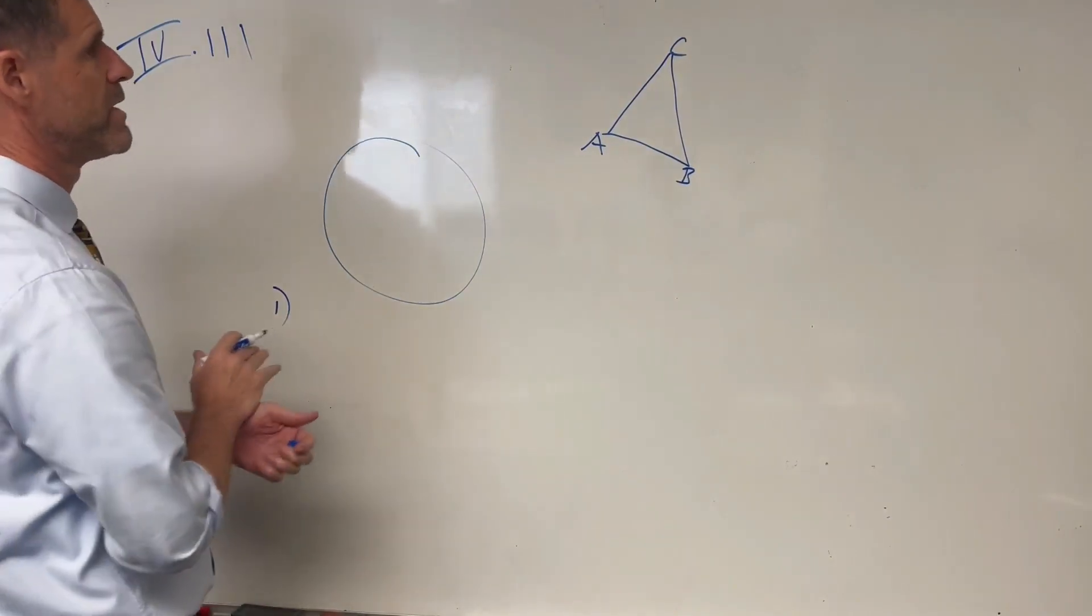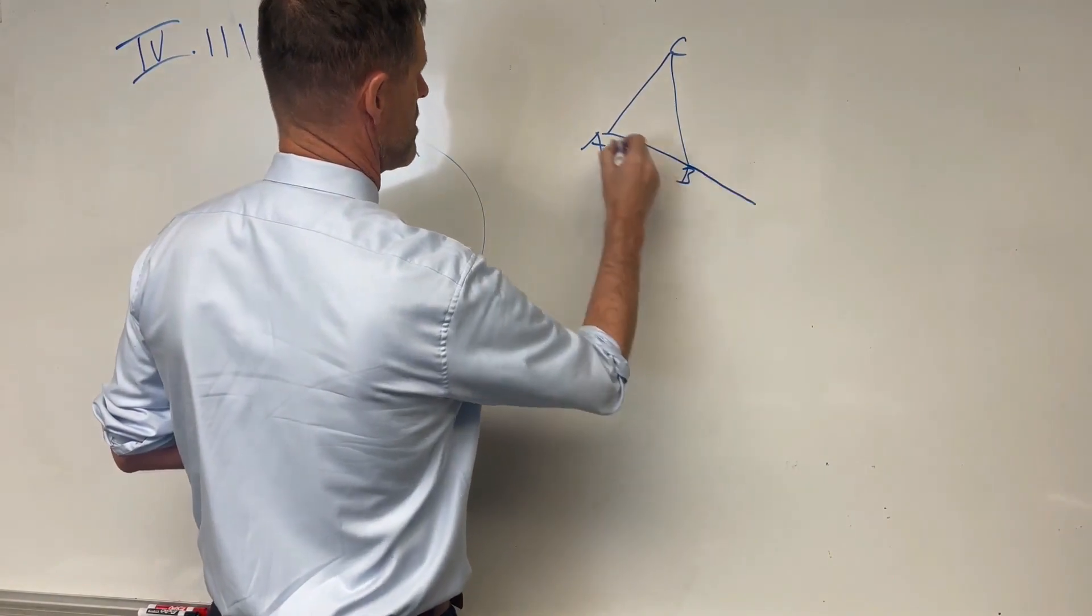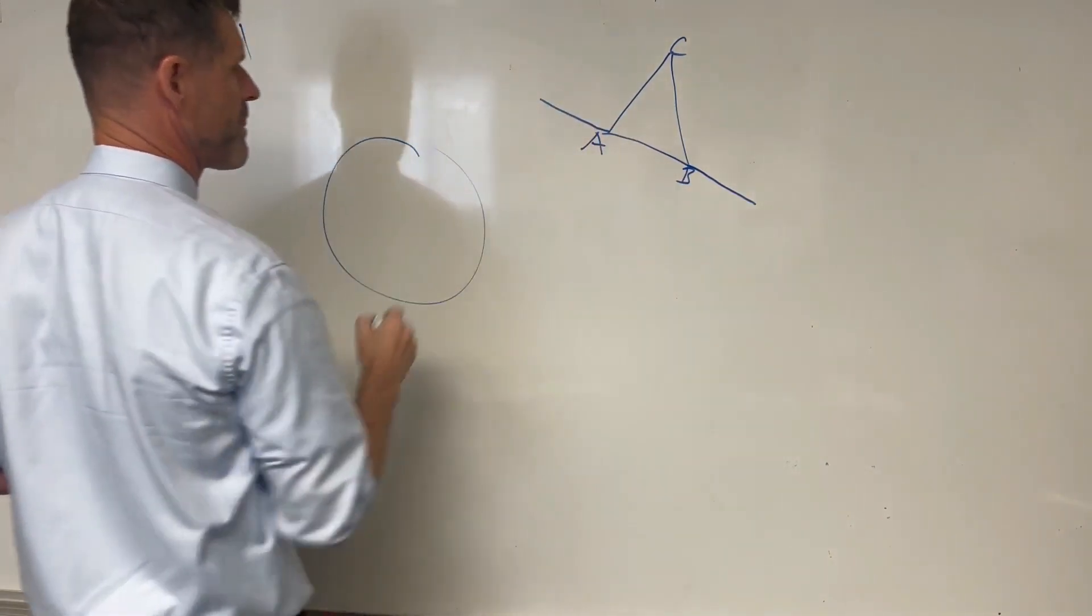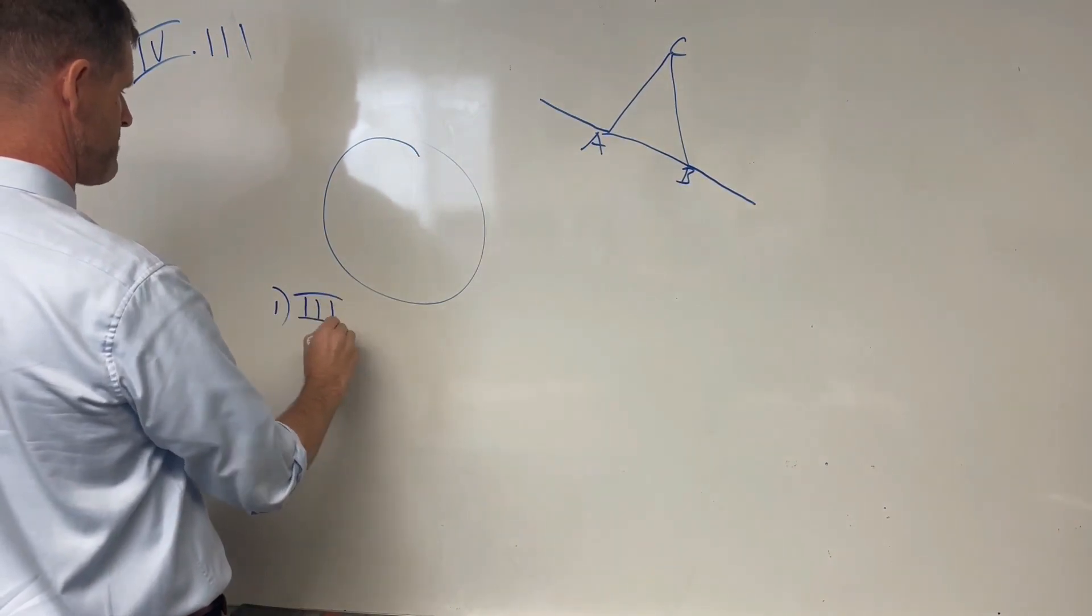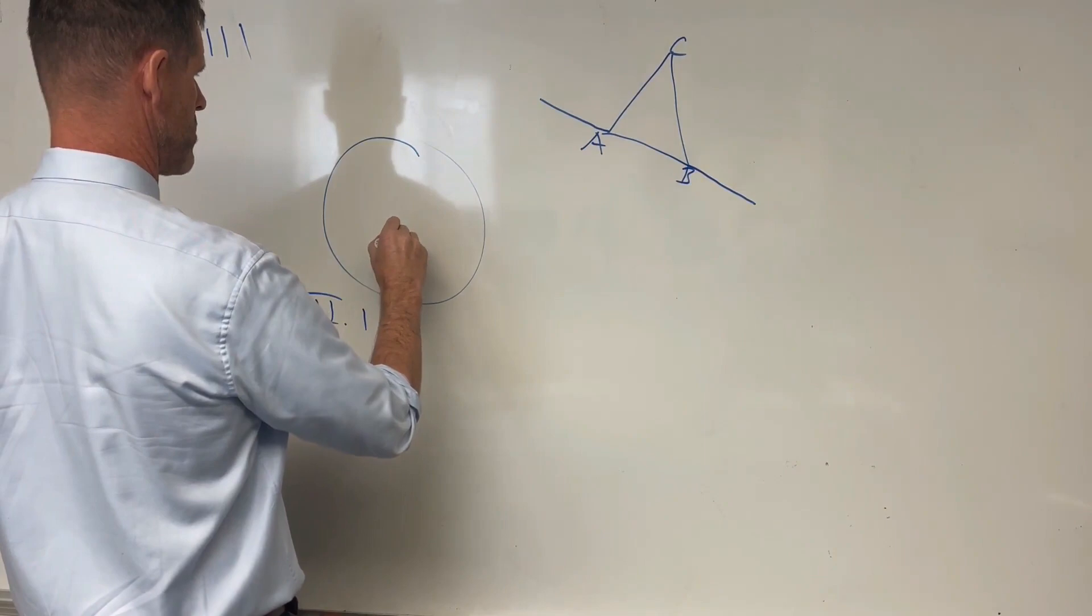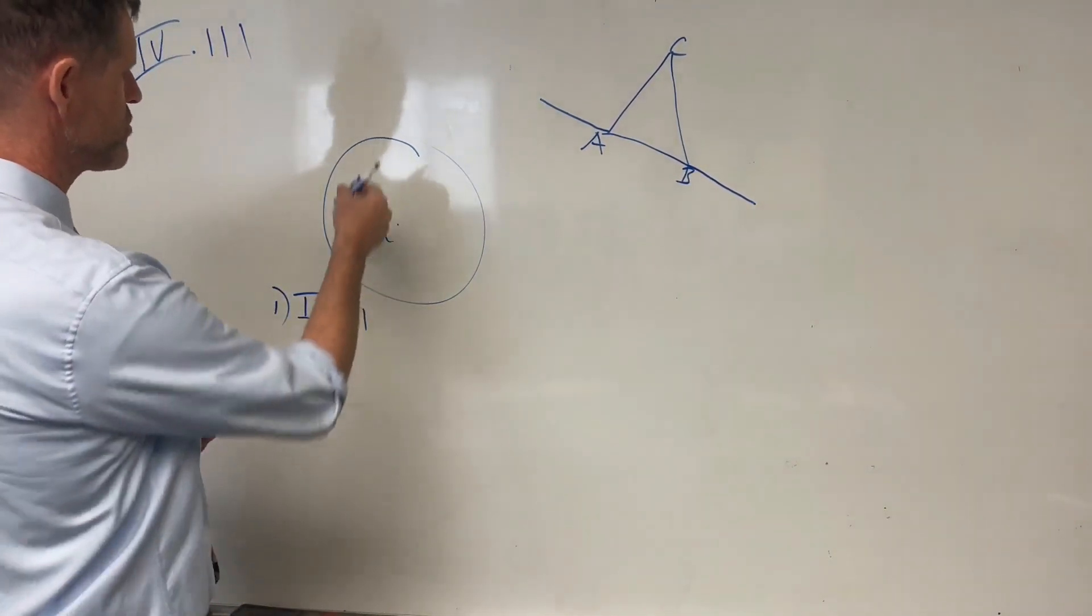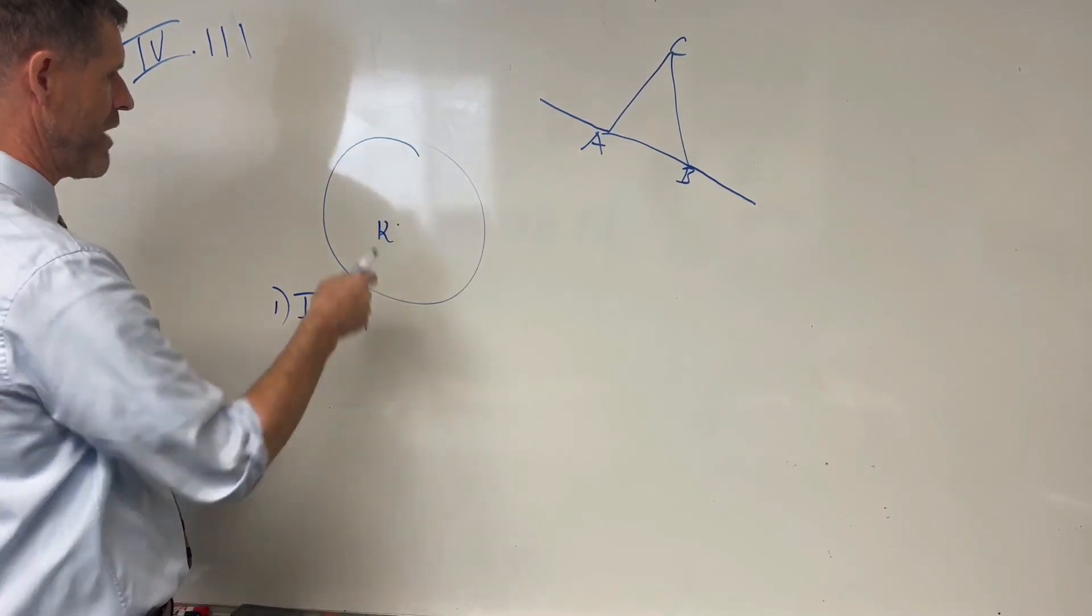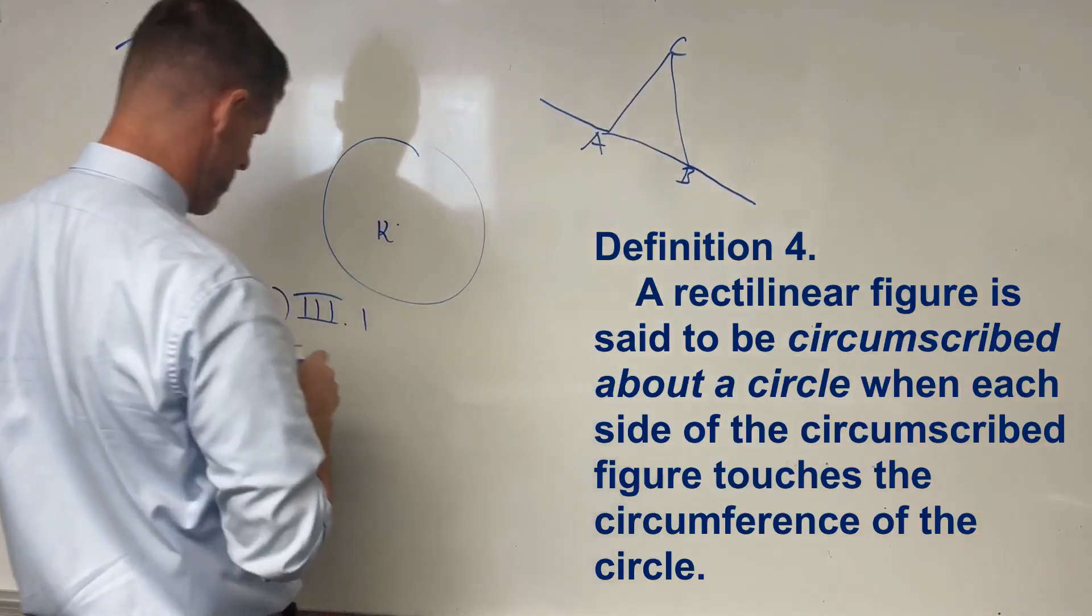Step 1. So the first thing we do is we extend out base A, B in either direction, and then our first main step is to find the center of this circle. We'll call it K. And what we ultimately want to do is to circumscribe a triangle about this circle, which will be equi-angular with our given triangle.